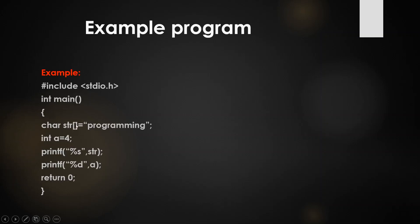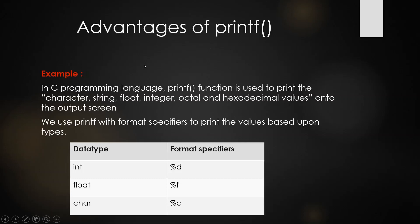Since printf function is used for printing to the output screen, str was already defined as "programming", so printf will display it. While compiling, the compiler sees the printf function and first checks the header file. In the header file there are definitions for all the functions — stdio.h will have the definition of printf. The compiler finds the definition of printf and acts according to it.